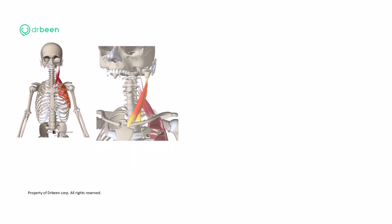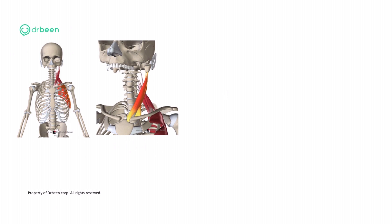Let us look at those a little bit more in detail. This is the sternocleidomastoid — it would lift the sternum up and anchor it, so it is not pulled down by the muscular movement, and the sternum continues to move in a bucket handle movement.